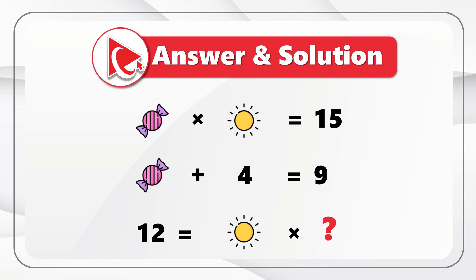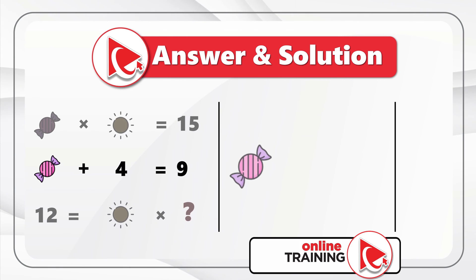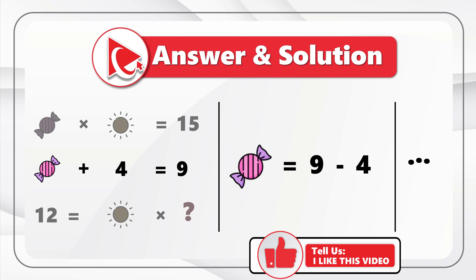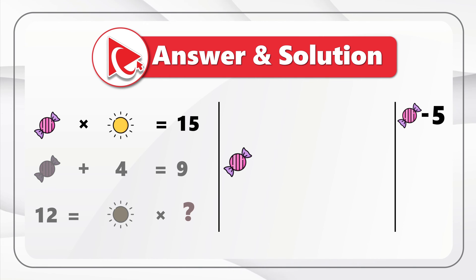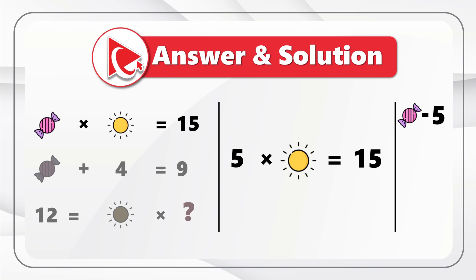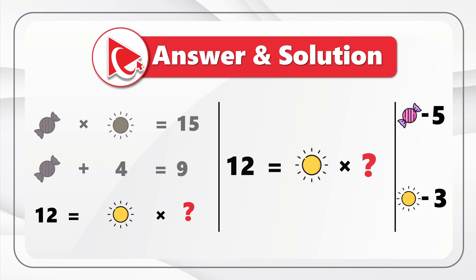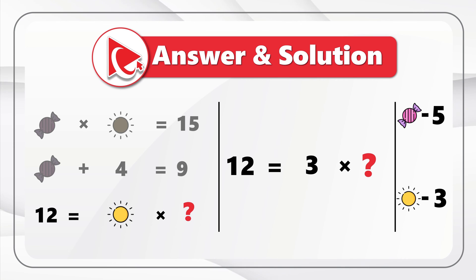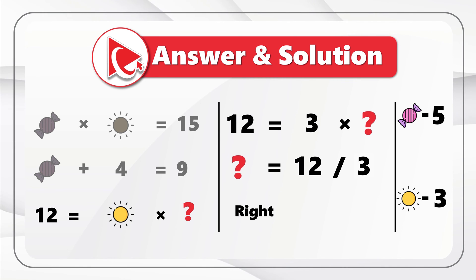This set of expressions looks unsolvable, but in reality, if we start with the middle expression, we can solve it. Starting with candy plus four equals nine: candy equals nine minus four, so candy equals five. Now knowing candy equals five, let's focus on the top expression candy multiplied by sun equals 15. Substituting, five multiplied by sun equals 15, so sun equals three. Finally, 12 equals sun multiplied by question mark — substituting sun as three gives 12 equals three multiplied by question mark, so question mark equals 12 divided by three, which is four. The correct answer is choice C, four.